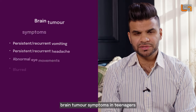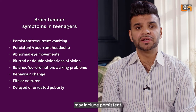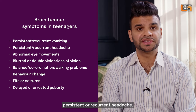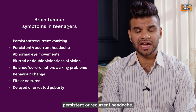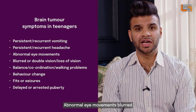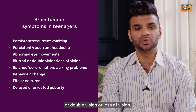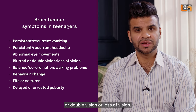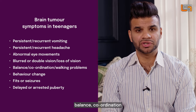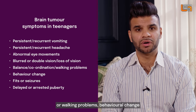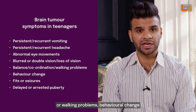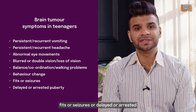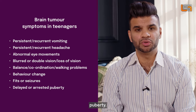Brain tumour symptoms in teenagers may include persistent or recurrent vomiting, persistent or recurrent headache, abnormal eye movements, blurred or double vision or loss of vision, balance, coordination or walking problems, behavioural change, fits or seizures, or delayed or arrested puberty.